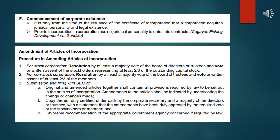We are now on the commencement of corporate existence. It is only from the time of the issuance of the Certificate of Incorporation that the corporation acquires juridical personality and legal existence. Prior to incorporation, a corporation has no juridical personality to enter into contracts. For a corporation to legally commence its operation, it must first be issued a certificate from the Securities and Exchange Commission, after which they are given a license to operate — the primary and secondary franchise — to freely conduct operations.